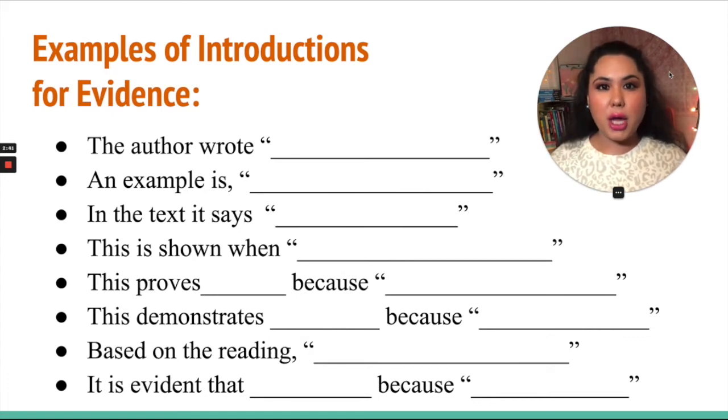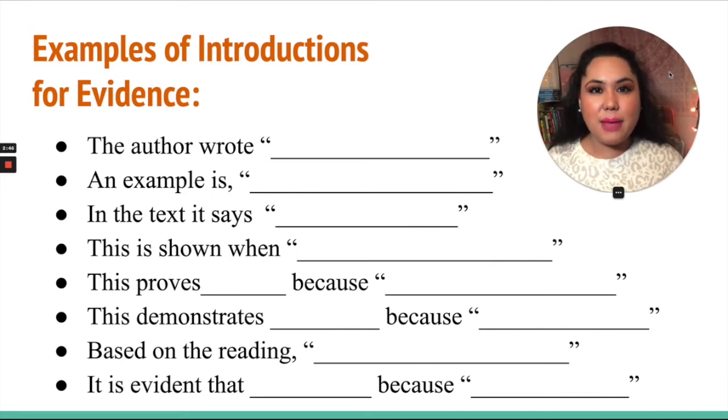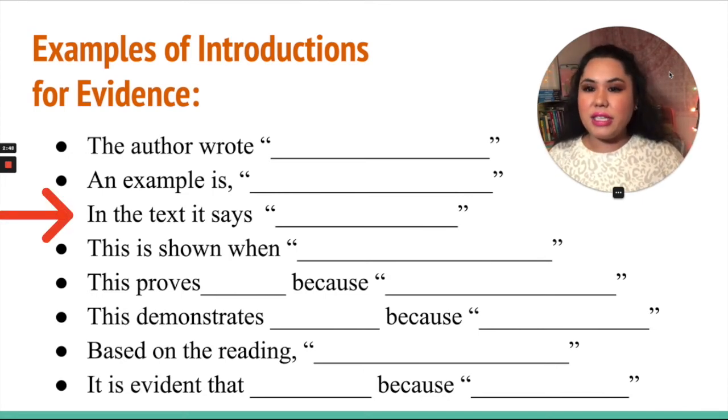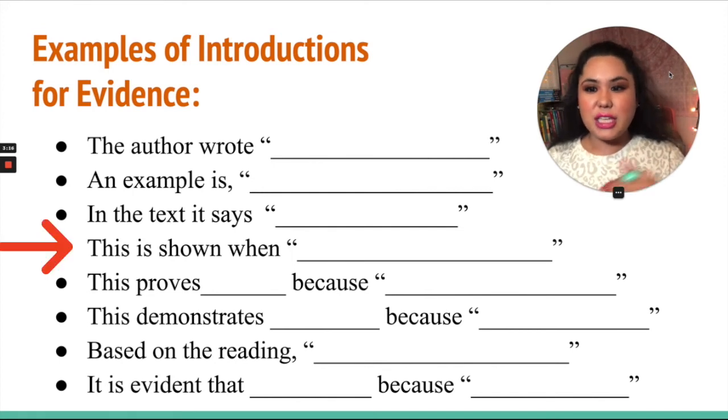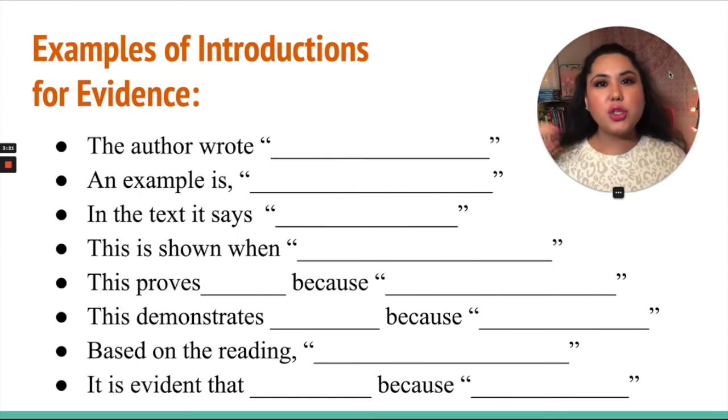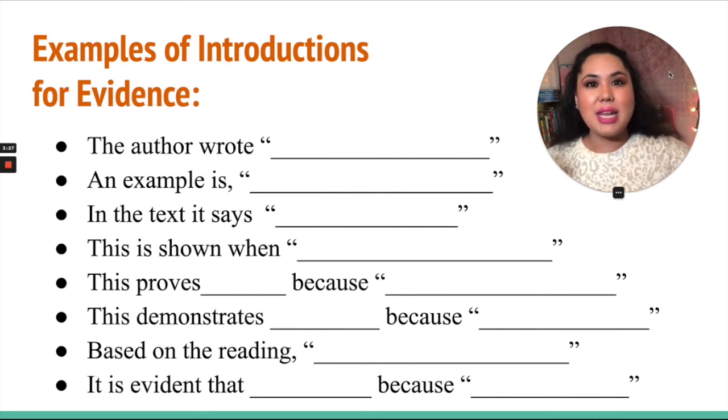For example, you're talking about how power went to Julius Caesar's head and how he didn't listen to anybody. And then you say, in the text it says. And then give a direct quote that shows that Julius Caesar was getting too pompous and big headed for his position. This is shown when. Then you give a quote that shows what you were talking about right before. Right? So you're explaining. Then you're explaining that you're going to talk about the quote. Then you're going to talk about the quote some more in your analysis. But you need to frame everything correctly. Do not just drop and run.